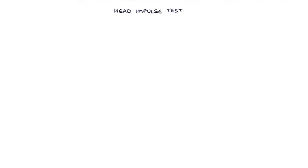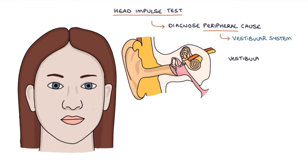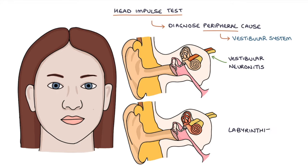Let's talk about the head impulse test. The head impulse test can be used to diagnose peripheral causes of vertigo resulting from problems with the vestibular system, for example vestibular neuronitis or labyrinthitis.